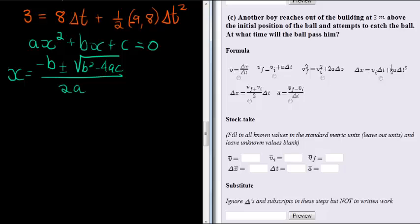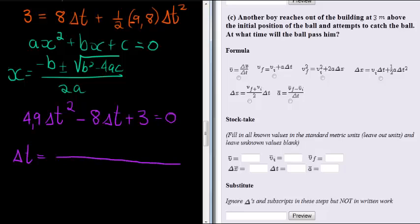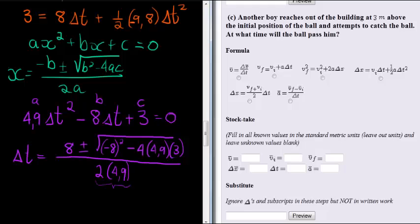But it really doesn't matter much. But when I do that, I find that a half times nine point eight gives me four comma nine delta T squared. Eight becomes negative eight delta T and the three is still positive at that side. It's equal to zero. Now I see that delta T is therefore equal to, and all I need to do is substitute into this formula of mine: negative B means negative eight times negative one gives me positive eight plus minus square root of B squared, means negative eight squared, make sure that the negative is also squared, minus four times four point nine times three, because this is a, that is B, and that is C, times two times a is two times four point nine, which just gives me the nine point eight again.